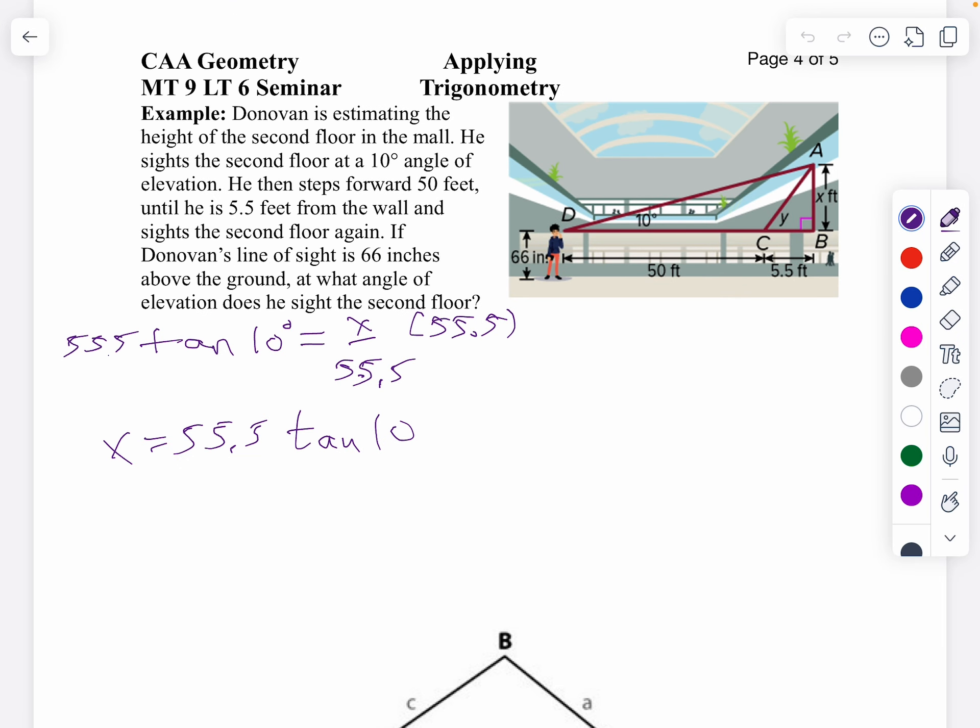So x is 9.78 feet above Donovan's head. Now I can use that to find y. I'm still going to use my tangent function because I'm still looking at the opposite side and the adjacent side.